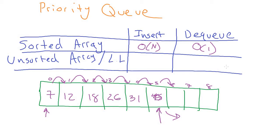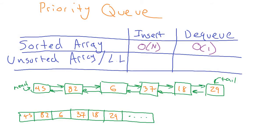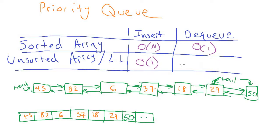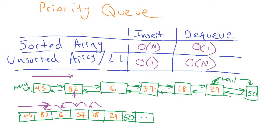Let's consider an unsorted array or linked list instead. The analysis for these two is the same. Inserting is quick because for a linked list we just make a new node, fix up a couple of links, and put the new data in. For the array, we just take the next available slot since it's not sorted. So insert is O(1) in this case. But dequeue is not going to be very good, because we need to scan through the linked list or array looking for the biggest item. That scanning takes O(n) time.